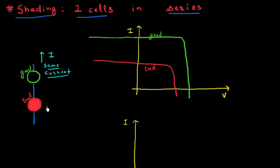Since these two cells are connected in series, it's like the saying that a chain is only as good as its weakest link. So even though this good cell can produce a much higher current and also a much higher voltage, the current through the overall system is generally limited by the current of the bad cell. It's the weak link which limits the strength of the overall cell.